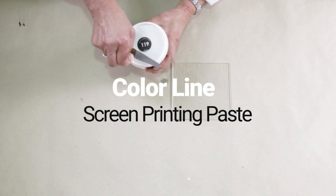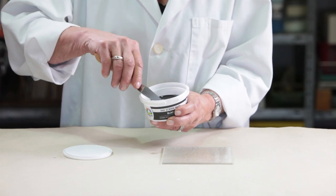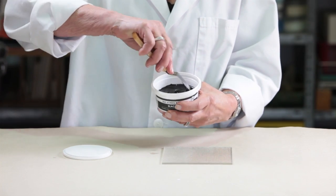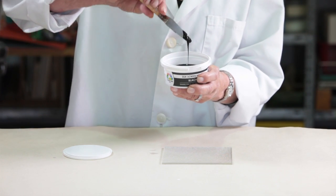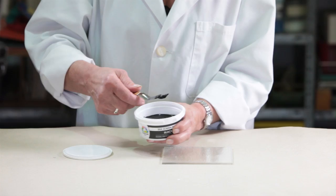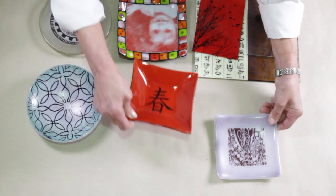In 2016, Colorline added a special line of silkscreen pastes. They are a mixture of lead-free pigments and a water-friendly medium. The pastes are designed to have the perfect consistency for screen printing.